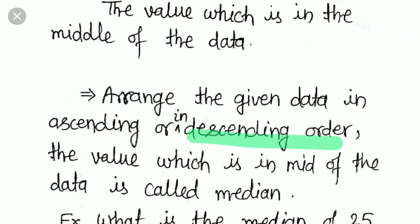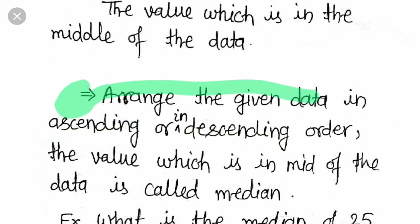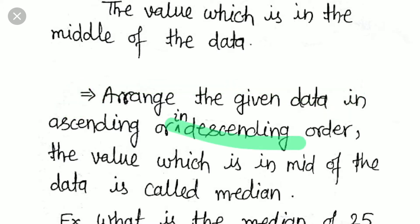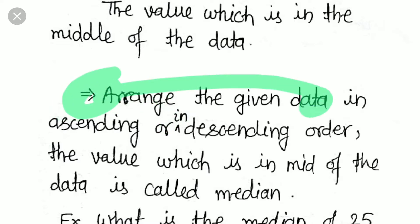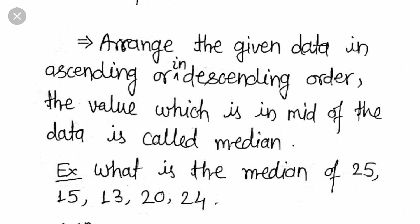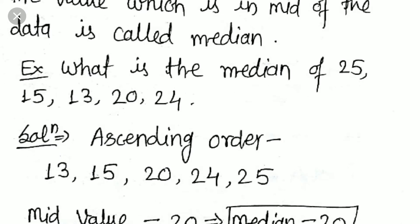Ascending order means the smallest value first and the largest value at the end. Descending order means the largest value first and the smallest value at the end. Once you arrange the data, the value which is in the middle is known as the median.